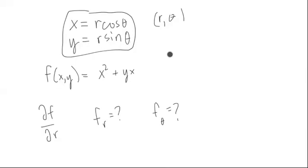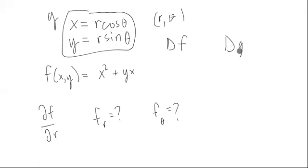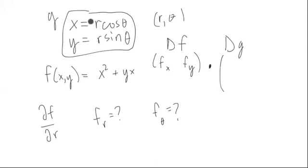How can we work with that? Well, chain rule again. We can think of a function f with two inputs and a function g that has two outputs and two inputs. The outputs are x and y, and the inputs are r and theta. We're going to think of two functions — call them g and f — and work with df and dg. For df, it's just fx and fy. For dg, since we have two outputs we have two rows, and two inputs we have two columns — so it's a two-by-two matrix.